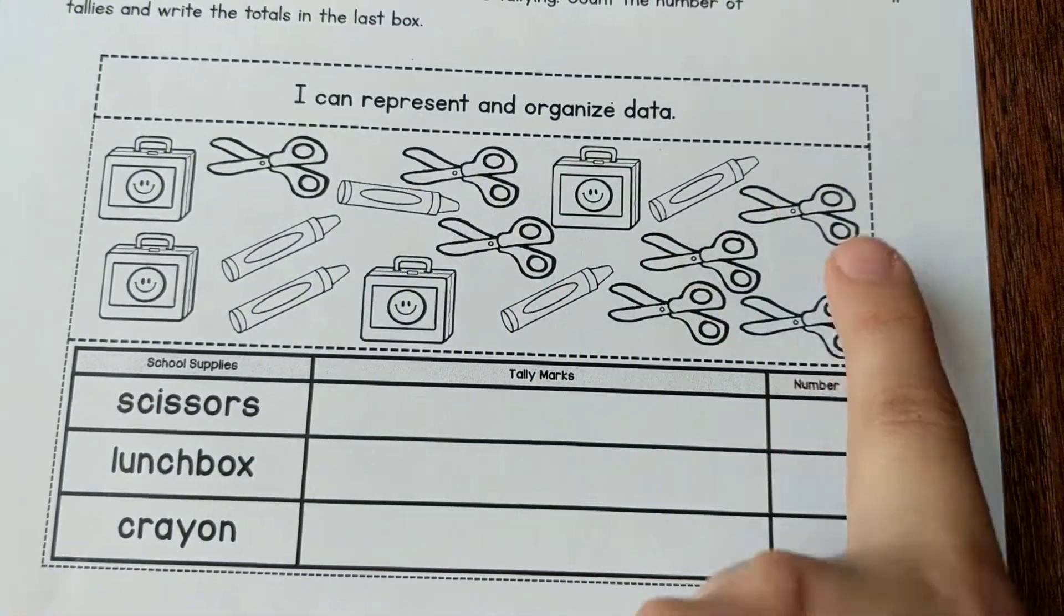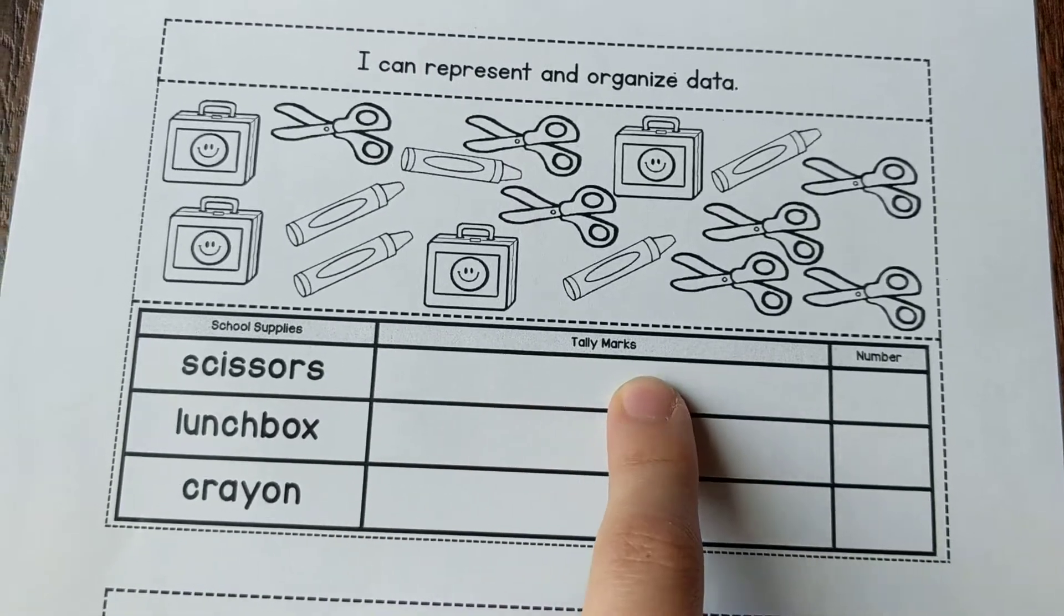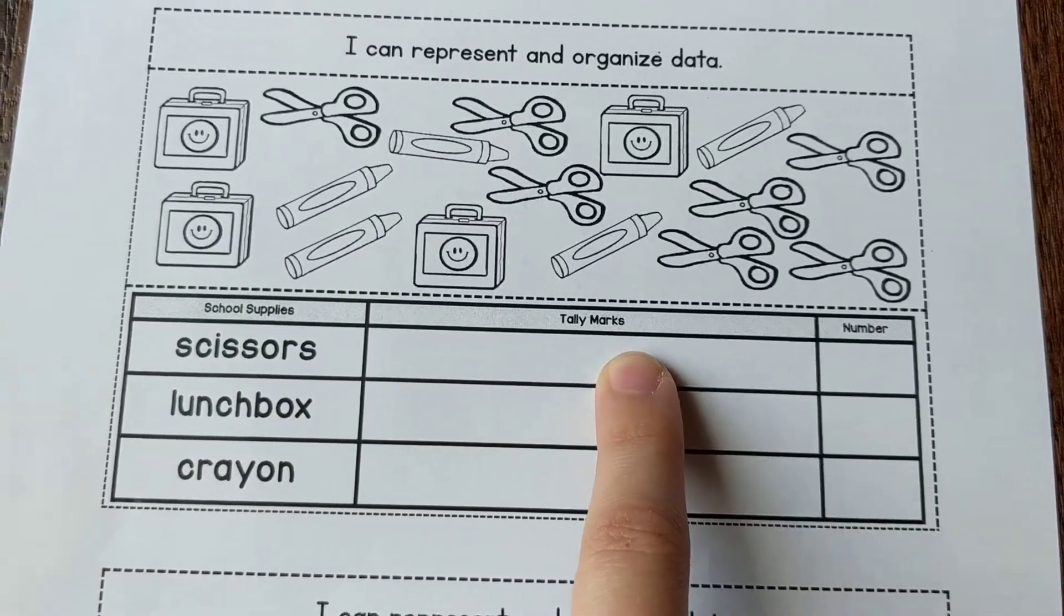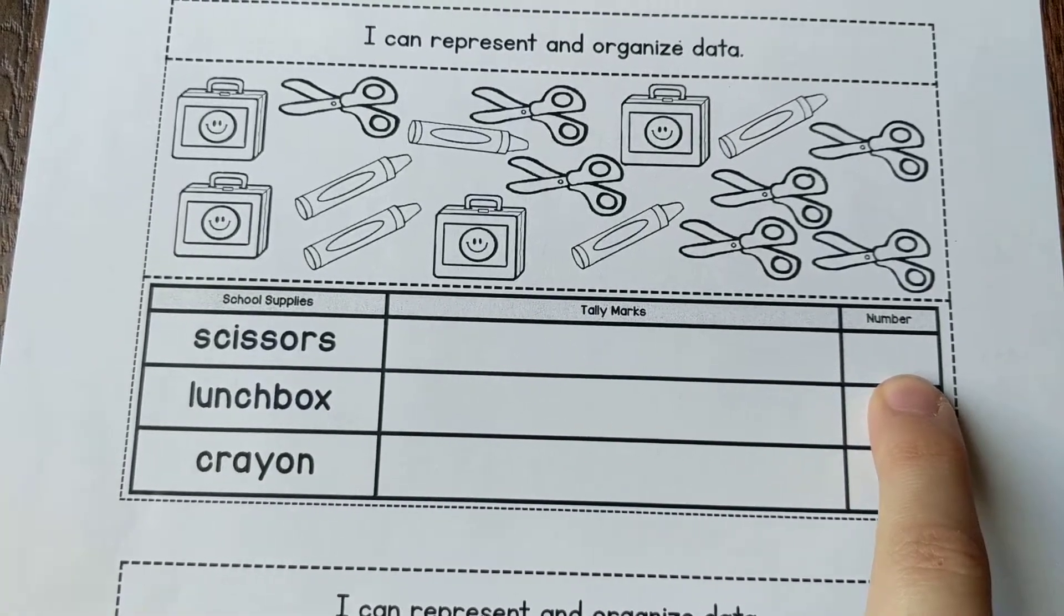So one, two, three, four, five, six, seven. You're going to tally mark that here. Make seven tally marks. Remember to shut the door after five. So we're making groups of five and then put the number seven right there.